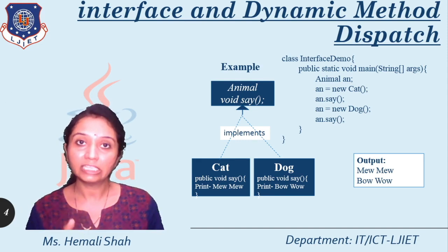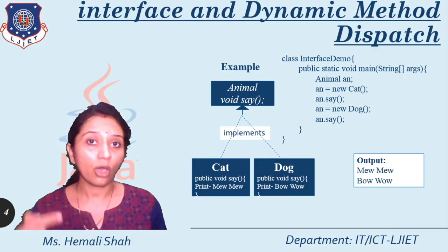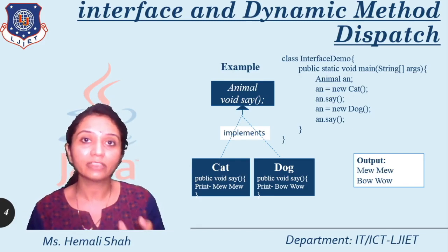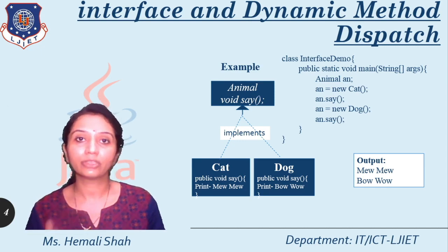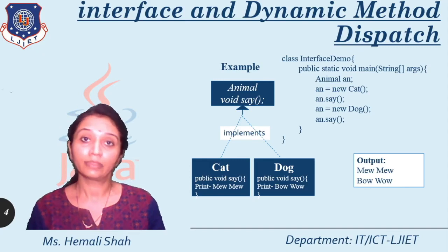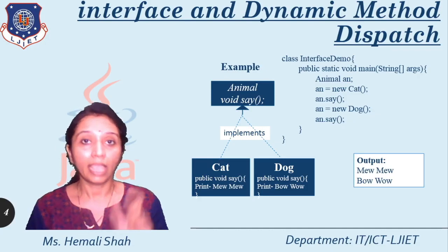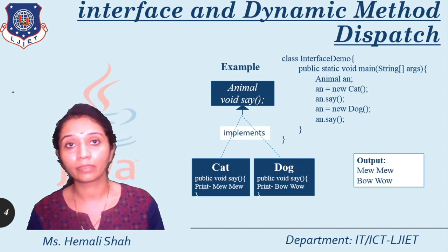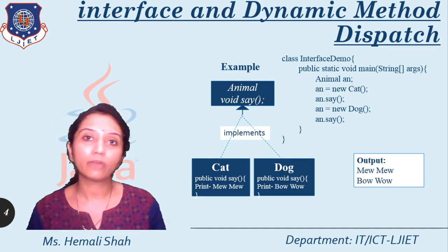This instance is referred to dynamically when you run your program. We are changing the reference of 'an' dynamically — first we assign a cat object, then we assign a dog object. That's why the reference variable's reference changes dynamically, and based on that the function is invoked. This dynamic method dispatch is provided by using the concept of hierarchical inheritance as well as the concept of overriding.